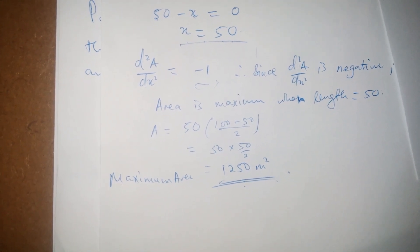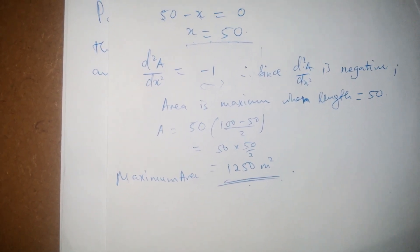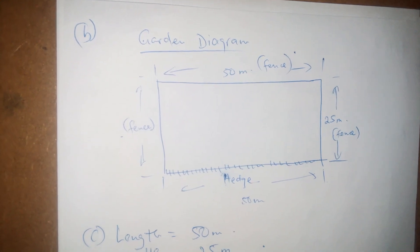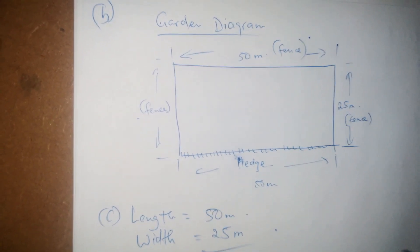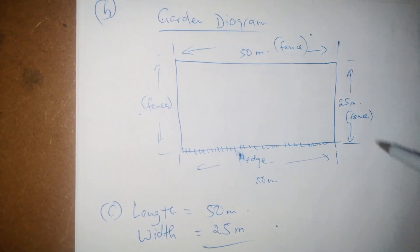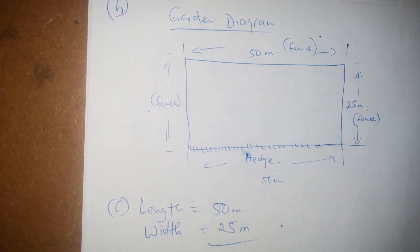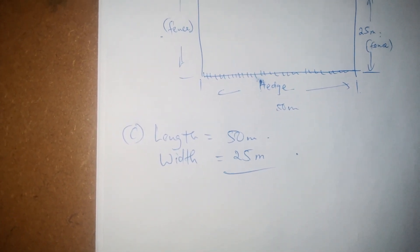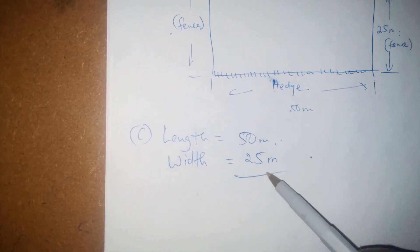That is our model to find the maximum area that can be fenced using the available fencing. For part B, we present this model using a diagrammatic approach. The garden diagram shows one side as the hedge at 50 meters, the opposite fence side at 50 meters, and the two widths at 25 meters each. The dimensions of the garden are: length = 50 m, width = 25 m.